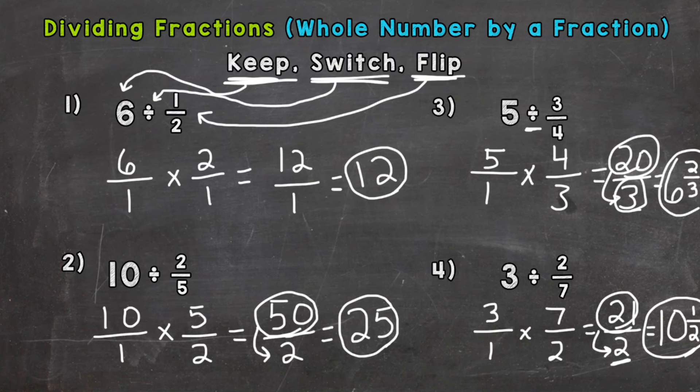So there you have it. Dividing fractions, and specifically a whole number by a fraction. Just keep in mind: keep, switch, flip, then you're able to multiply straight across, and then just simplify your answer, whether you need to convert to a mixed number, which means a whole number plus a fraction, like number three and four, or maybe it works out to be a whole number, like number one or two.